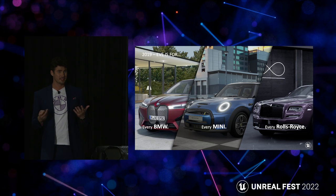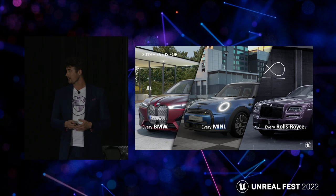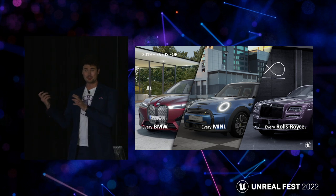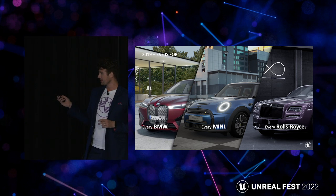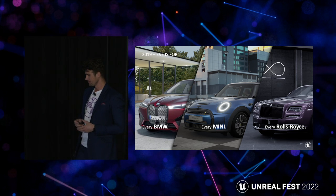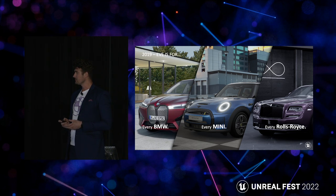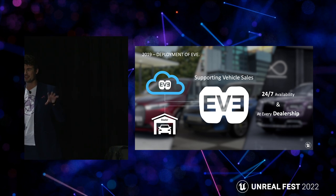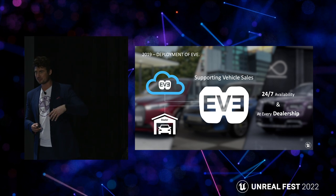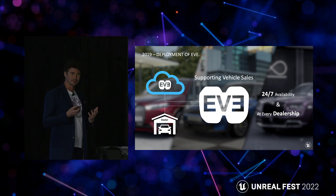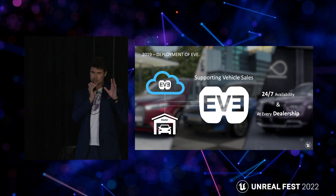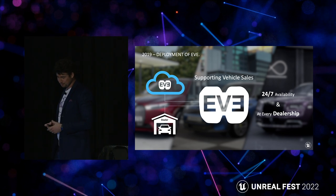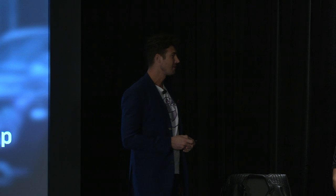EVE is not only for BMW but for every BMW, every Mini, and every Rolls Royce. We used the existing machines already at the dealerships and started rolling out in 2013, which the dealers loved because they didn't have to buy new machines. The hardware was there and we just deployed the new application. That was a huge challenge, not only for us but also for the Accenture team making the application, because we needed to run on traditional hardware while advancing the visualization component.